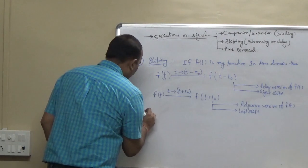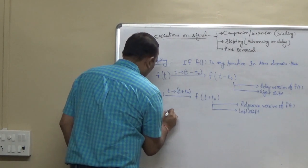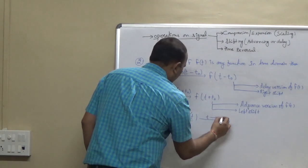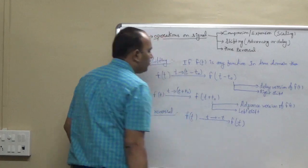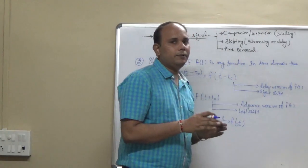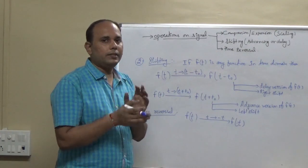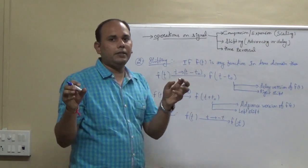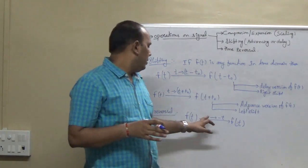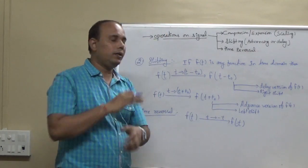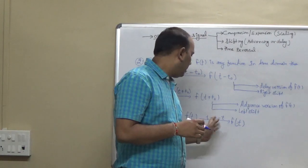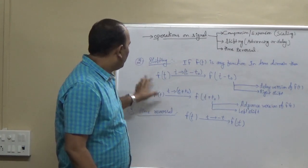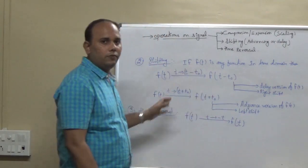The third part is time reversal. In this case, T is replaced by minus T, and it becomes F(minus T). If reversal takes place, the x-axis will be reverted, so it is just the mirror image with respect to the y-axis. When we change the time domain from plus T to minus T, it will be rotated by 180 degrees and become the mirror image with respect to the y-axis. We will see all the operations in detail for particular functions in the next video.